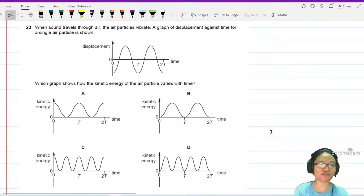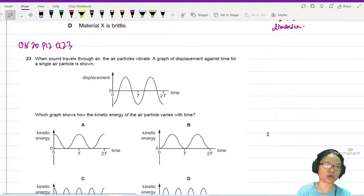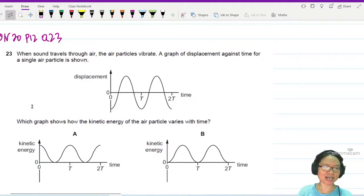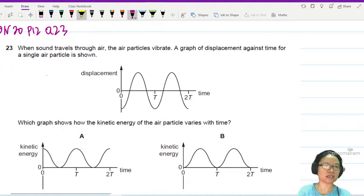So here, sound wave travels through air. This is Winter 20 paper 1-2, and air particles vibrate. A graph of displacement against time for a single air particle is shown.